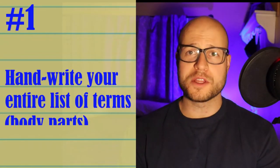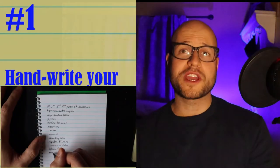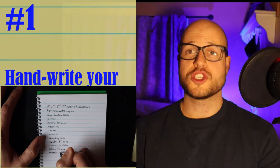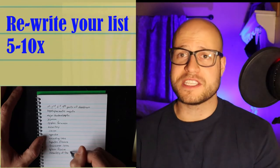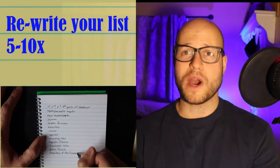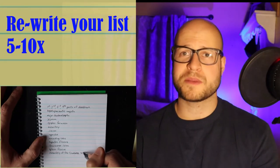Number one: make a handwritten list of all the body parts you gotta learn. Don't worry about what they look like or what they do, just focus on the words for now. Now rewrite this list at least five to ten times using a whiteboard. If you don't have a whiteboard, a piece of paper will do. And I know it's really boring, but I promise it's gonna pay off later.